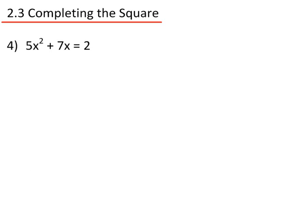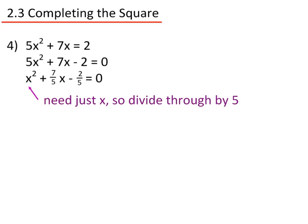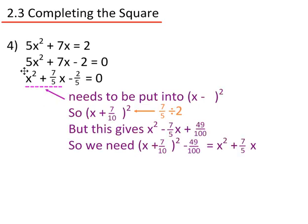The last example: 5x squared plus 7x equals 2. Rearranging: 5x squared plus 7x minus 2 equals 0. I only want x squared, so I divide everything by 5: x squared plus 7 over 5 x minus 2 over 5 equals 0. Now I complete the square on x squared plus 7 over 5 x. Dividing 7 over 5 by 2 gives 7 over 10, so I get x plus 7 over 10 all squared. Expanding gives x squared plus 7 over 5 x plus 49 over 100, so I subtract 49 over 100 to cancel it.